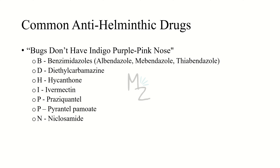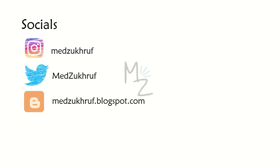For anti-helminthic drugs: 'Bugs don't have indigo purple pink nose' — B is for benzimidazoles: albendazole, mebendazole, and thiabendazole; D is for diethylcarbamazine; I is for hyacanthone, an anti-helminthic used against schistosoma; the second I is for ivermectin; P is for praziquantel; another P is for pyrantel pamoate; and N is for niclosamide.